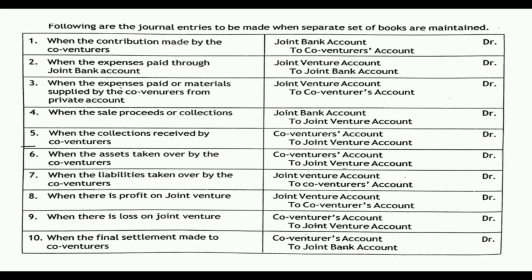Third entry: when expenses are paid or material is supplied by the co-venture from their private account — Joint Venture Account Dr. to Co-ventures Account. The material is received by the venture so joint venture account is debited, and it is provided by the co-venture so co-venture is credited. Fourth entry: when sale proceeds or collections are received — Joint Bank Account Dr. to Joint Venture Account, since income is received into the bank.